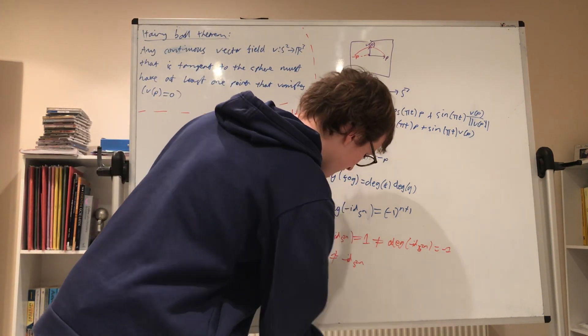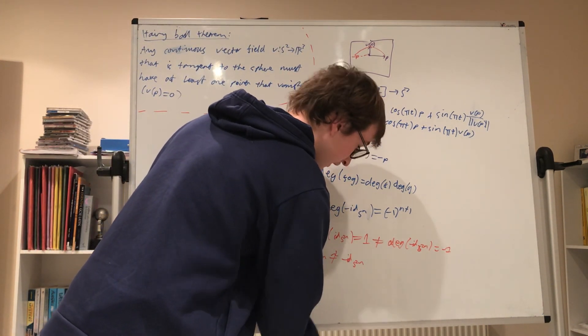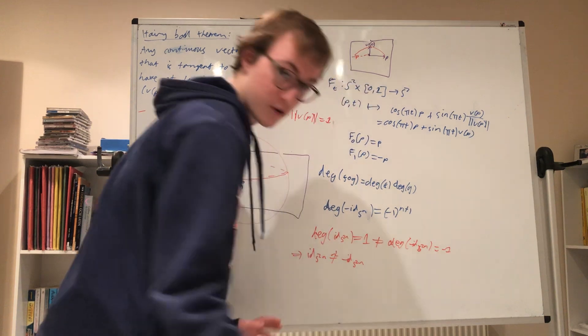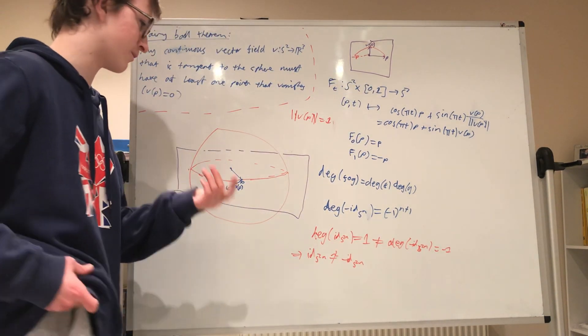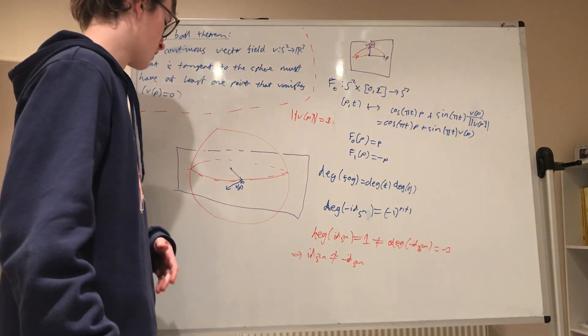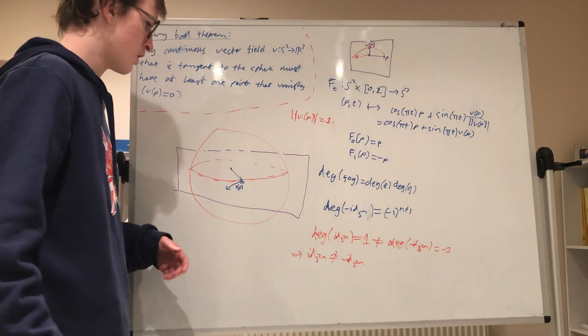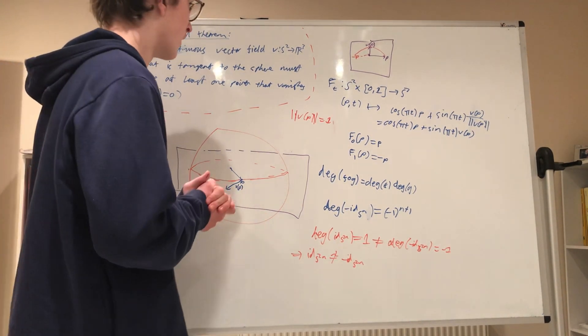So that's the proof done. We have a contradiction, because we just defined an identity homotopy, meaning the part that must have been wrong was that V(P) must have had a vanishing point — which makes the homotopy not continuous, not well defined. Therefore, any continuous vector field tangent to the sphere must have at least one point that vanishes.